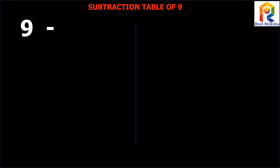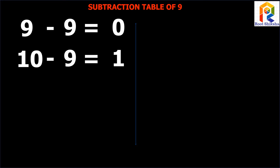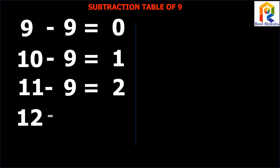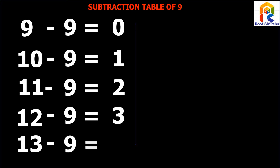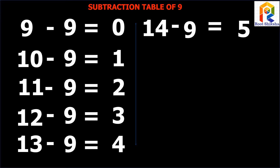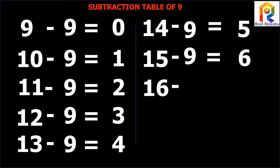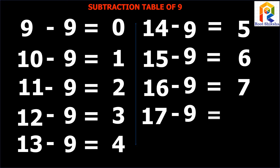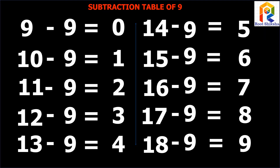9 minus 9 equals to 0. 10 minus 9 equals to 1. 11 minus 9 equals to 2. 12 minus 9 equals to 3. 13 minus 9 equals to 4. 14 minus 9 equals to 5. 15 minus 9 equals to 6. 16 minus 9 equals to 7. 17 minus 9 equals to 8. 18 minus 9 equals to 9.